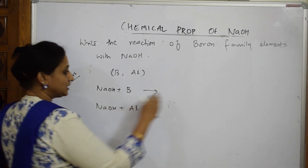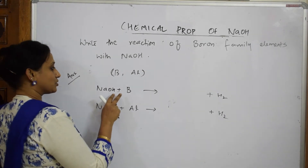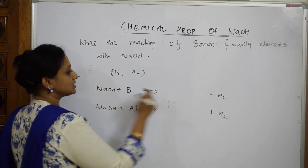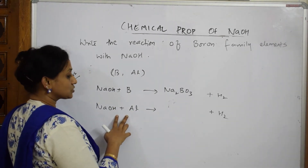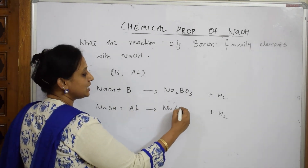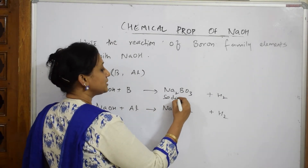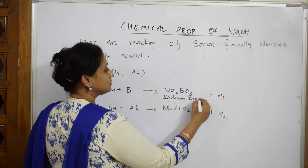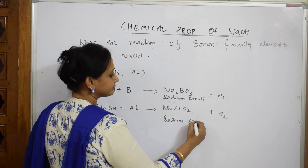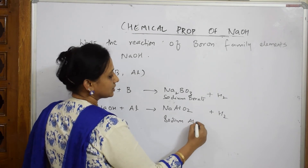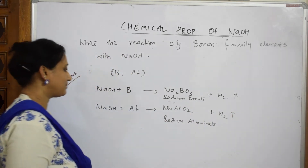In both cases, hydrogen gas is evolved. A salt is also formed: for boron, it is Na₂BO₃ — sodium borate; for aluminium, it is NaAlO₂ — sodium aluminate. Remember: sodium borate and sodium aluminate are the respective products, and hydrogen gas is released in both reactions.